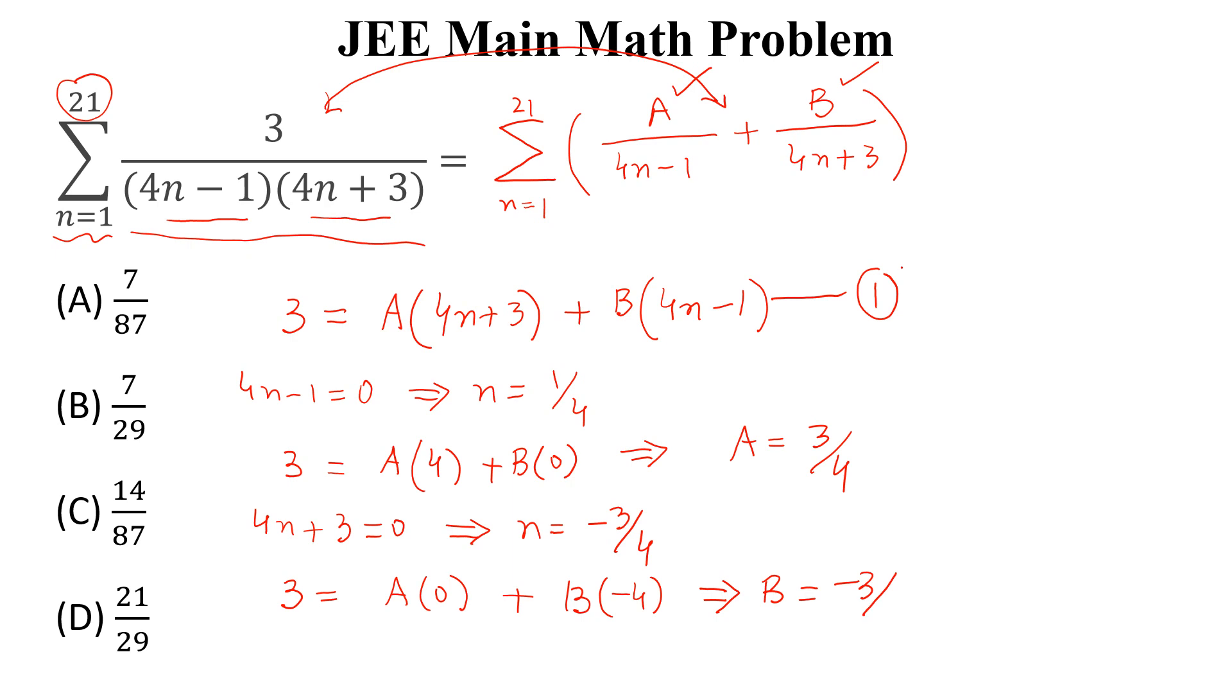So this becomes n starts from 1 up to 21 and we can take 3 by 4 outside. So 1 divided by (4n minus 1) minus 1 divided by (4n plus 3).